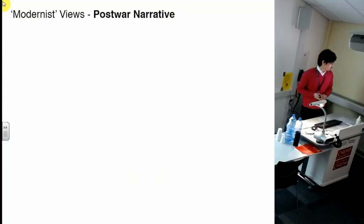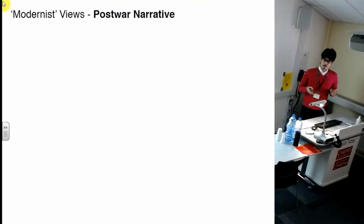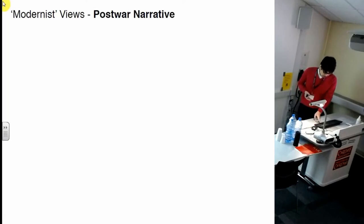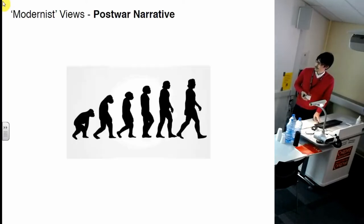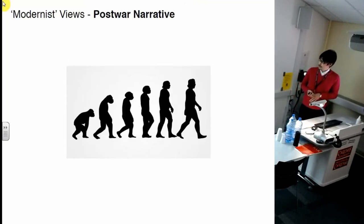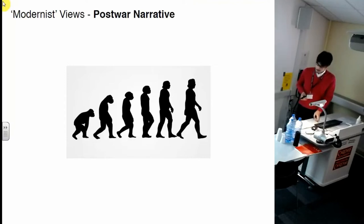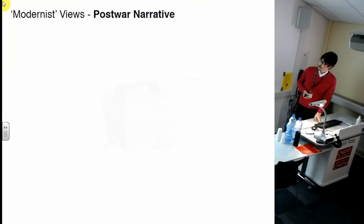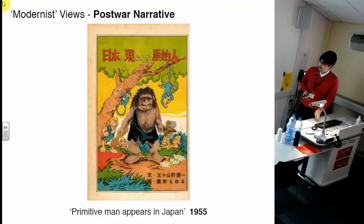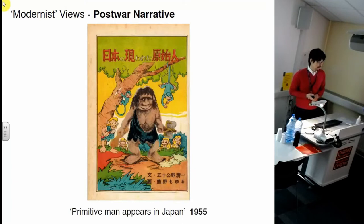The second keyword is post-war narrative. Prehistoric archaeology during the war was part of the myth of imperial Japan. Post-war, instead of myth, a more rational and scientific view emerged — evolutionism. Under these circumstances, this kind of image appeared. A primitive man appeared in Japan in 1955.